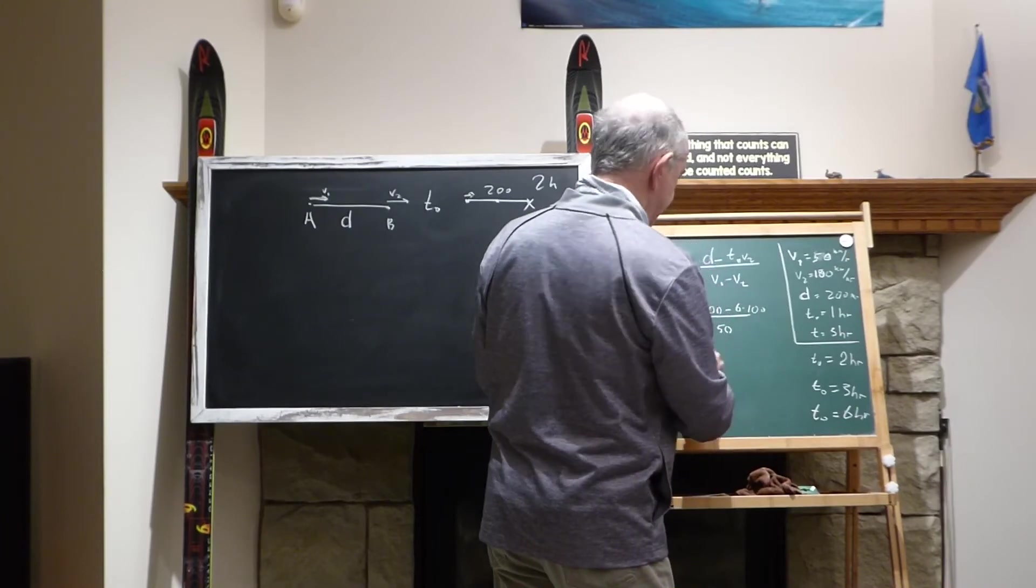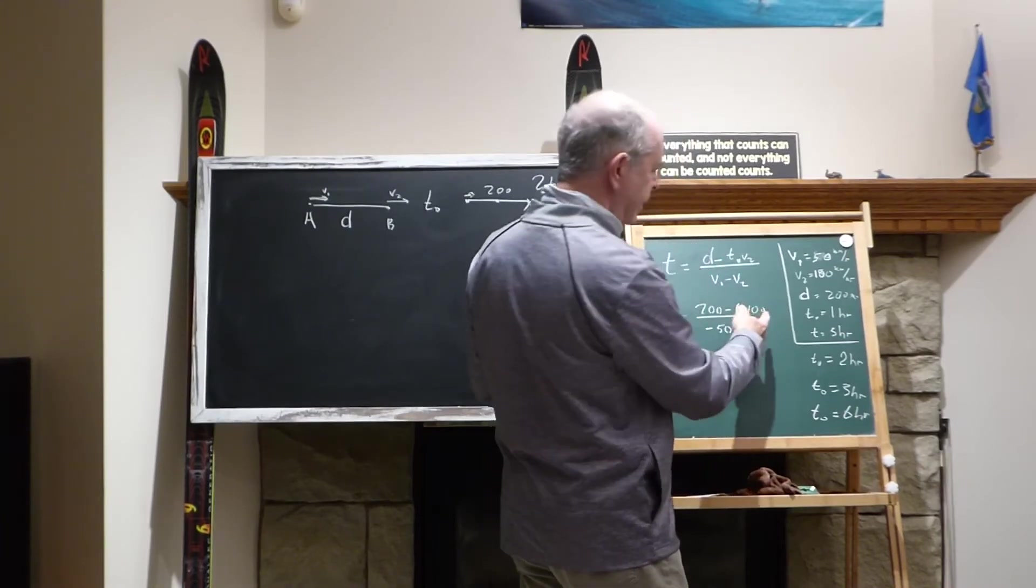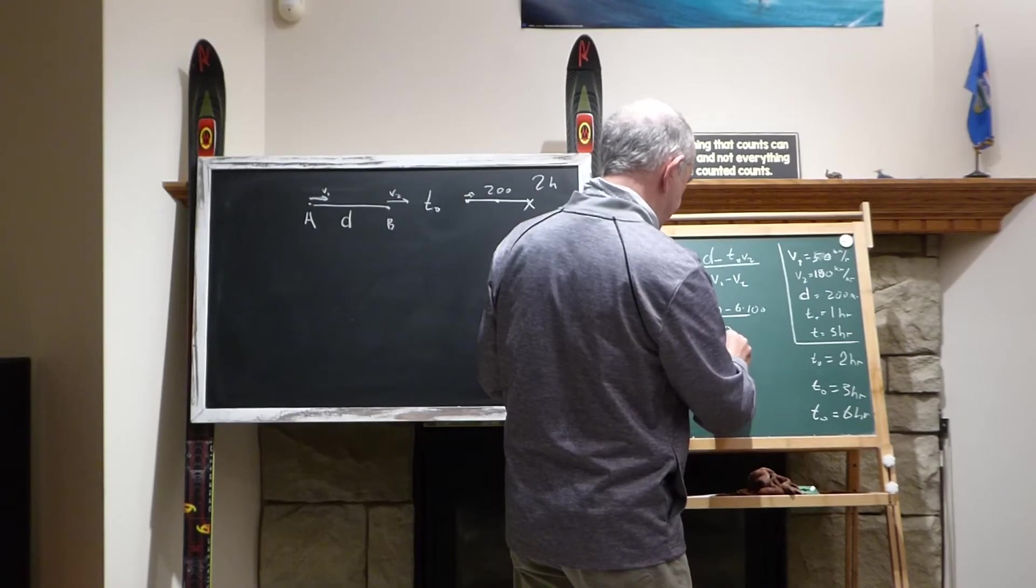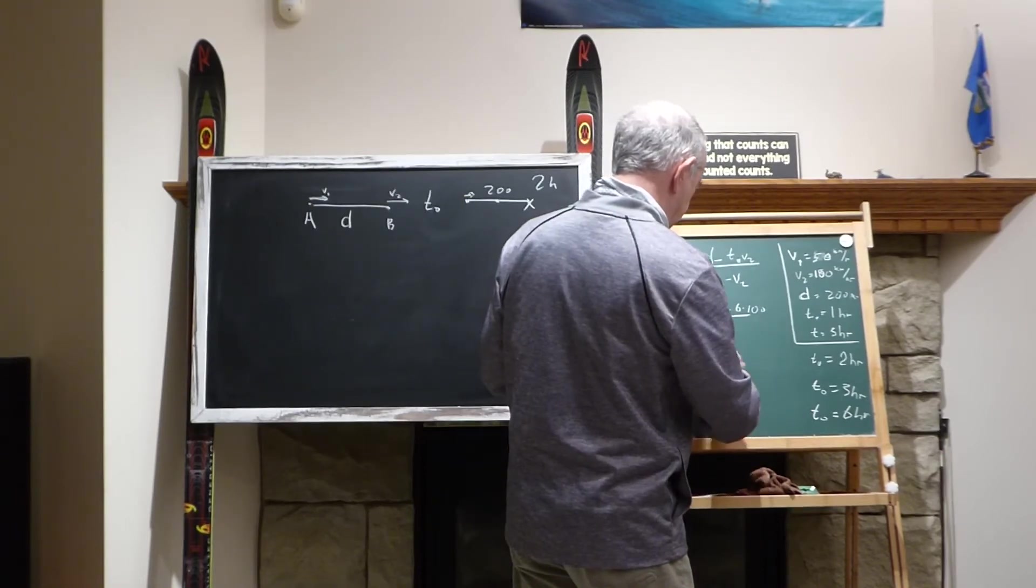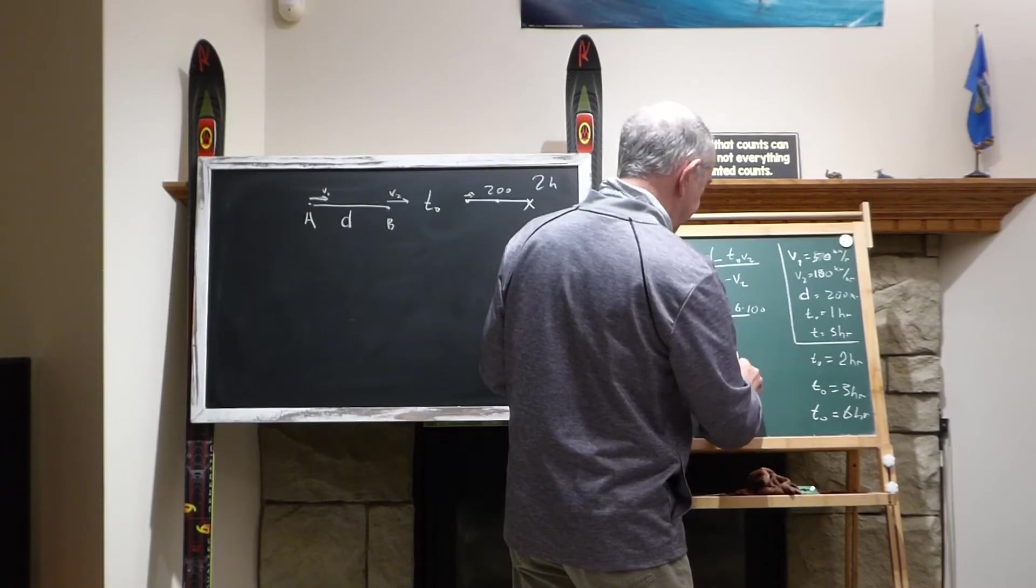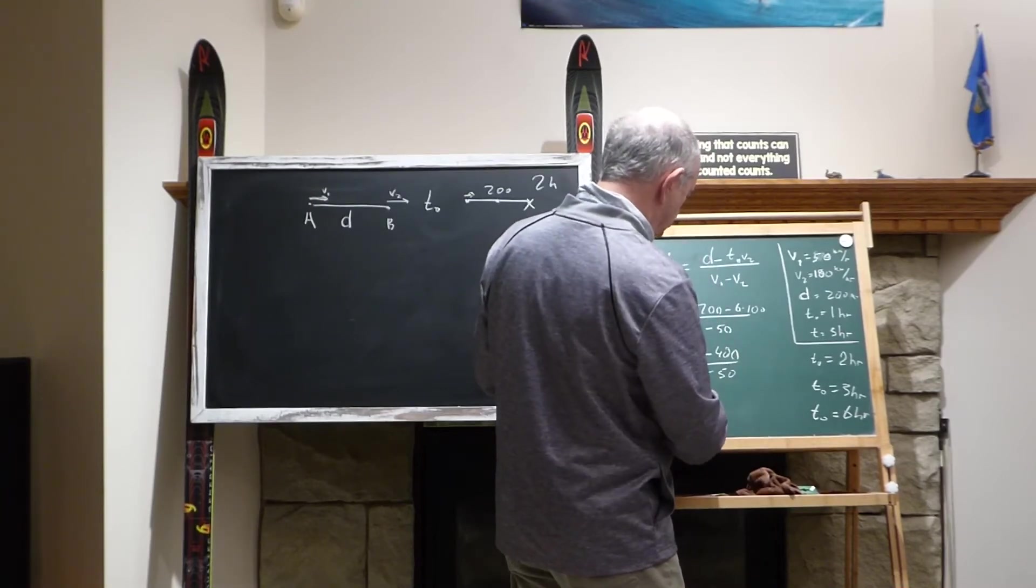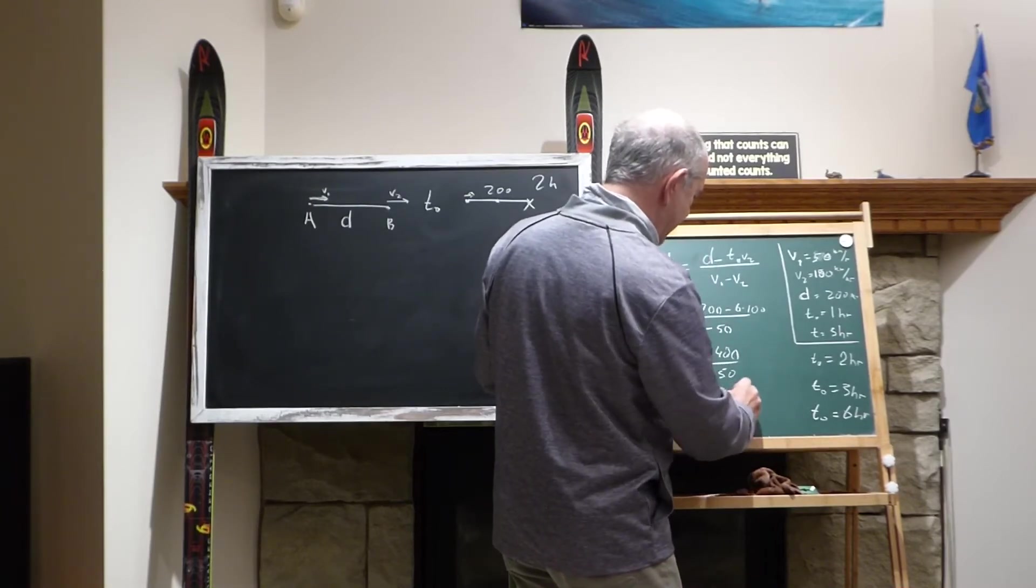So I receive something like 200 minus 600, it would be minus 400. And I will divide it by minus 50, minuses will be gone, and T would be eight hours.